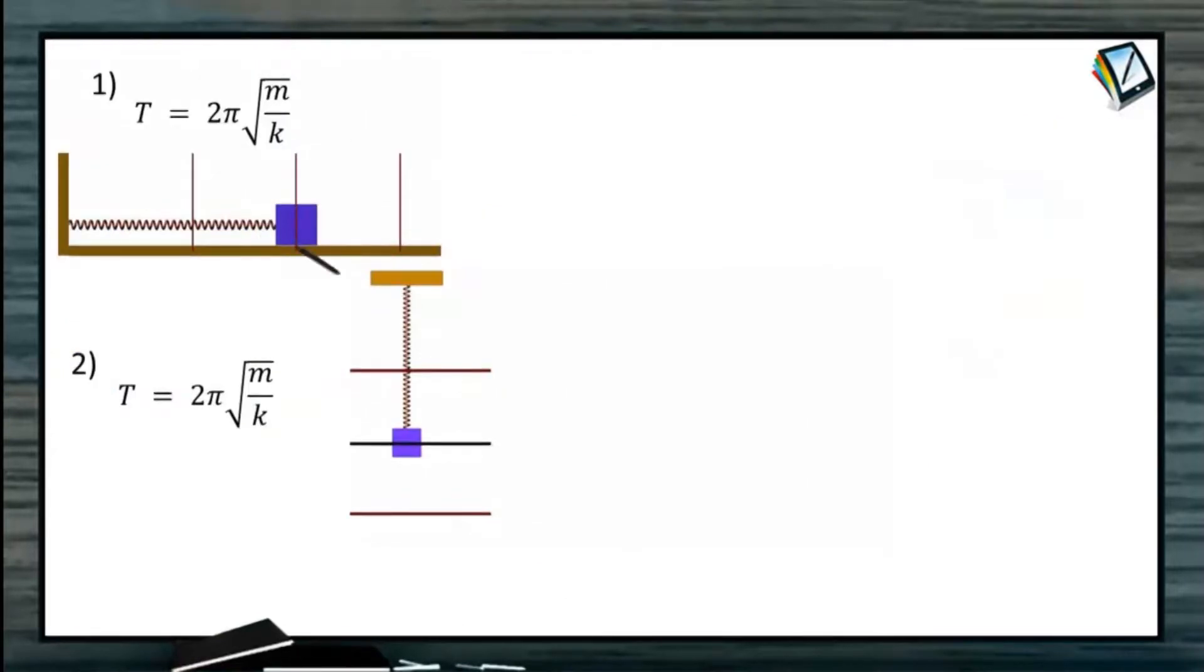The time period of oscillation is going to remain the same because angular frequency is the same in both cases. Here the spring is made to oscillate horizontally, and time period is 2π under root M by K that we have derived. Here you can see this animation of the block oscillating about its mean position. Here is the mean position and it is made to move one way and the other way.